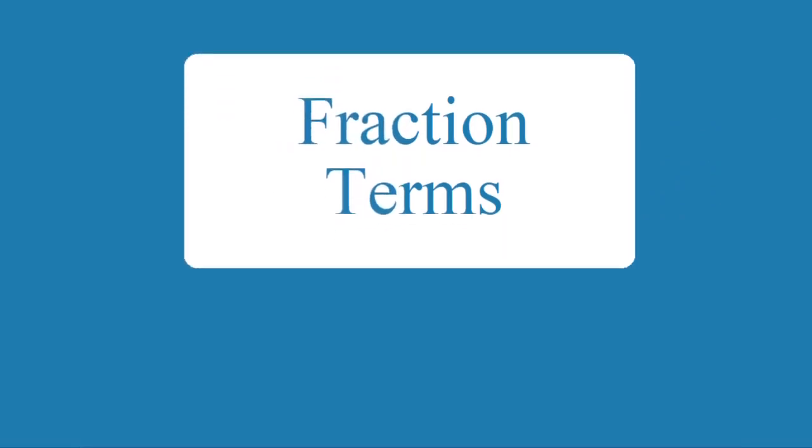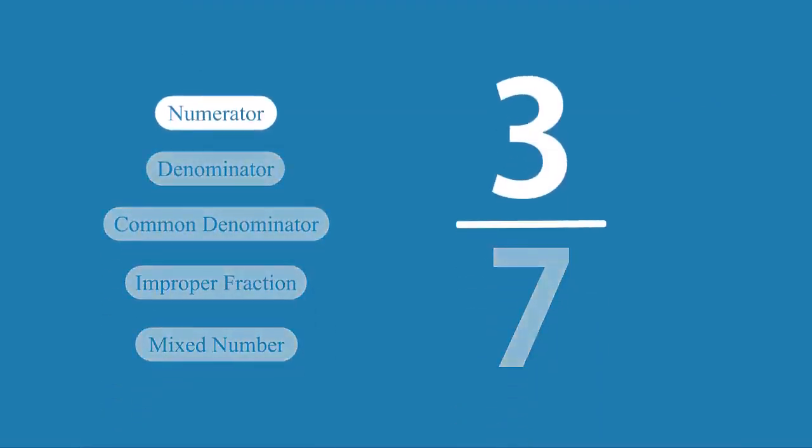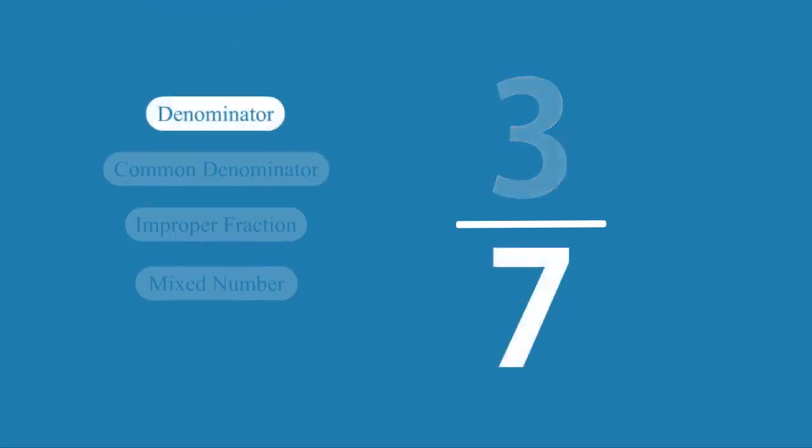Fraction terms. Numerator: The top of a fraction, the number of parts being talked about. Denominator: The bottom of a fraction, the number of parts in the whole object.